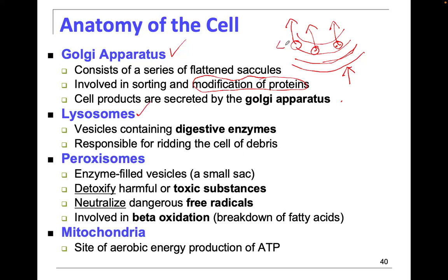Lysosomes contain digestive enzymes and tend to have lots of hydrogen in them. The more hydrogen in a cell, the more acidity. If there's bacteria, debris, or a pathogen, the vesicle produced — which has lots of digestive enzymes and hydrogen — acts as a digestive enzyme to get rid of all that cellular debris.